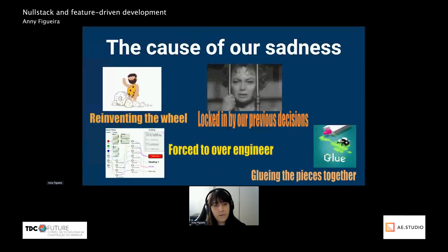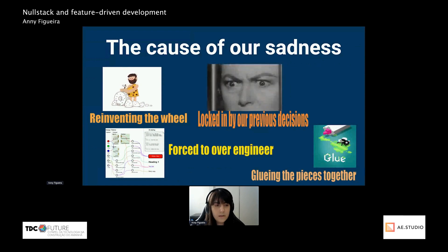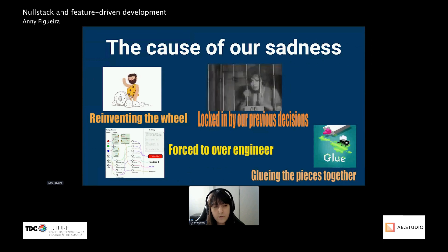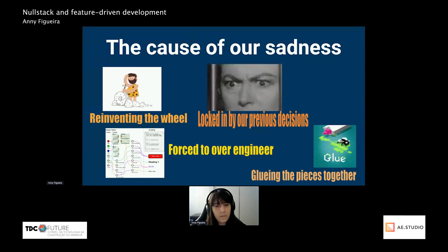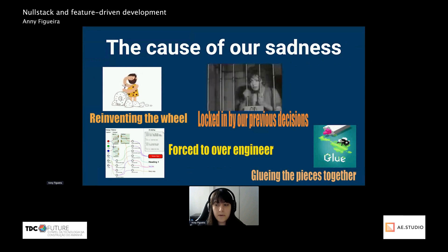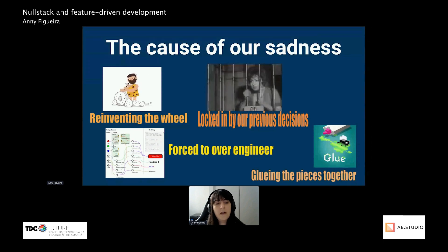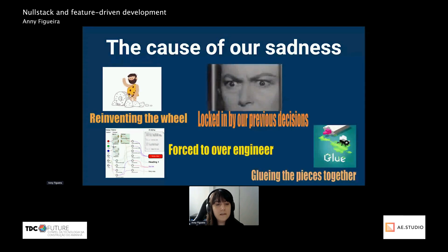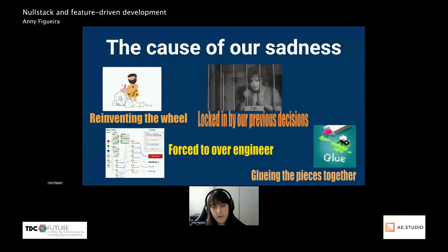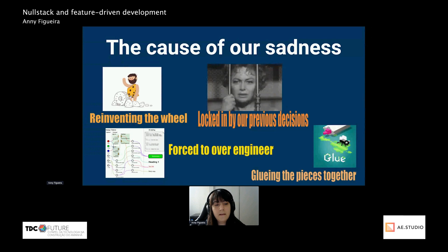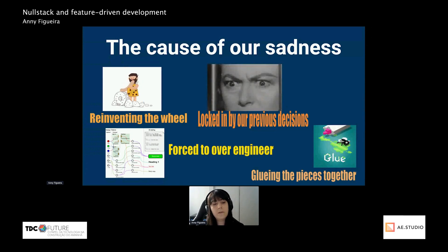I started thinking about why we wanted to run away from programming in the first place, and I came up with a few things that were happening more than a comfortable amount of times. Those were: being forced to reinvent the wheel even when working with a JavaScript framework, especially when JavaScript already had a solution but it wasn't compatible with that framework. Being locked to a structure due to previous architecture decisions — sometimes you're not even responsible for those decisions, but you're the one who has to pay the price for them. Being forced to over-engineer just to keep things from falling apart. And having to glue together multiple APIs that are not cohesive with that specific framework.